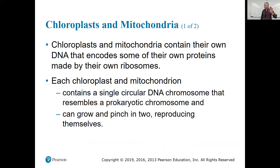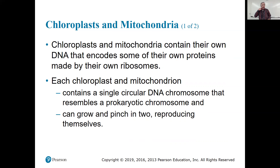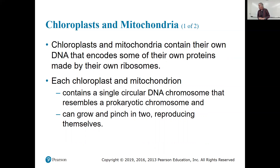Here's an interesting thing: chloroplasts and mitochondria contain their own DNA. They have a chromosome inside that encodes some of their proteins, made by their own ribosomes. Each chloroplast and mitochondrion contains a single circular DNA chromosome that resembles a prokaryotic chromosome. It can grow and divide, reproducing themselves as bacteria do. When scientists found this out it was really bizarre — a prokaryotic chromosome inside the mitochondria: circular, not wrapped in histones, with other features that resemble a prokaryotic chromosome.